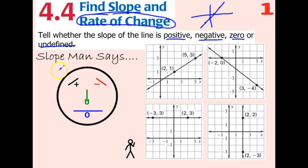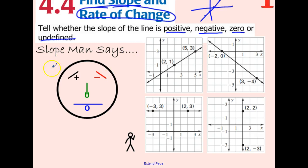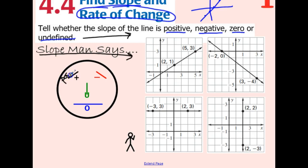On the wall in the classroom we have a poster with a face - this is slope man. His eyes show the positive and the negative slopes. We always read slope like we'd read a book, from left to right. So we read slope from left to right. If our line is going up, this is what we call a positive slope. If from left to right we're going down, this would be a negative slope.